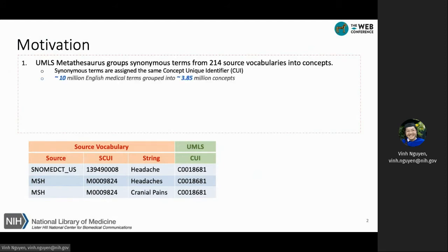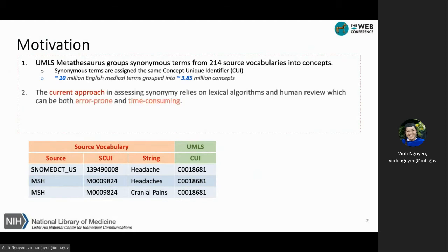The current version of the UMLS Metathesaurus has about 10 million English medical terms grouped into nearly 4 million concepts. The current process of identifying synonymous terms relies on lexical and semantic processing as well as human expert review. Therefore, this process can be costly, time-consuming, and error-prone.